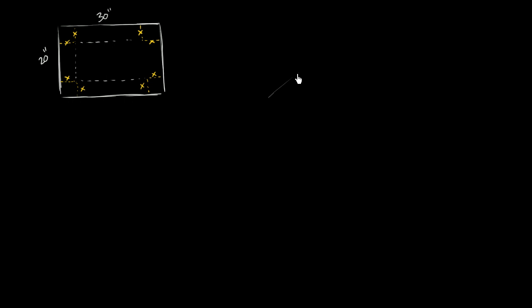After we cut out those corners, we can essentially fold down the flaps. We could fold right there, fold right there, and fold right there, and we would form a box — a box without a top to it. If we were to fold everything up, we would get a container. This is one flap folded up; if I fold it up like that, the height of the flap is x.